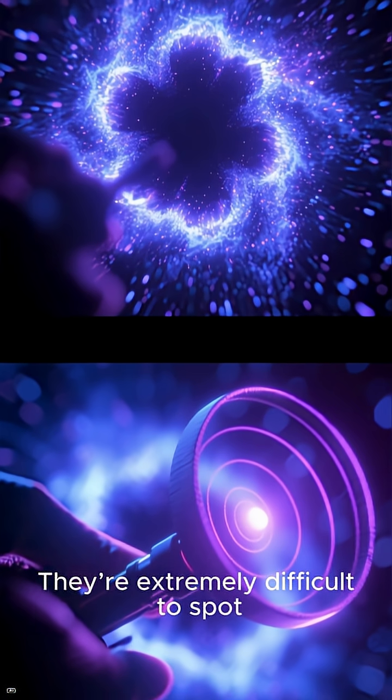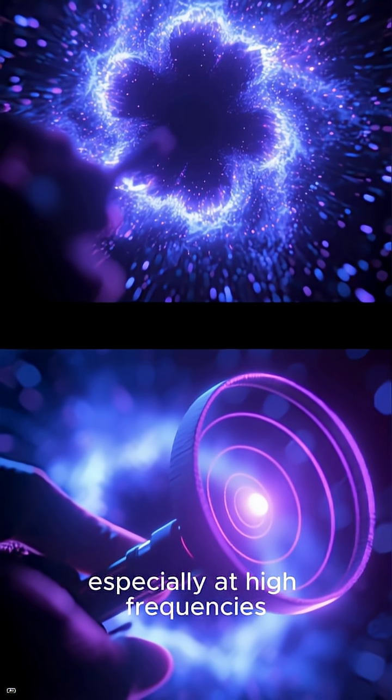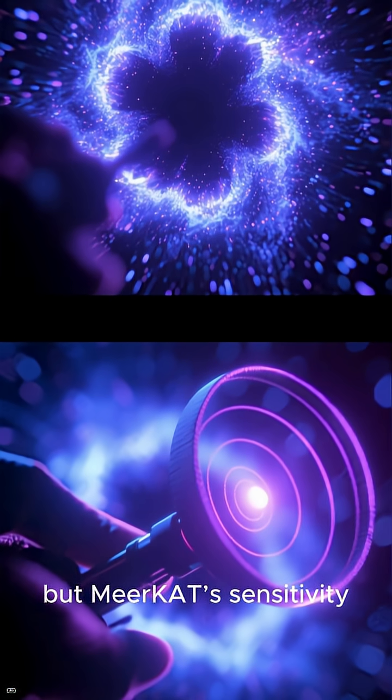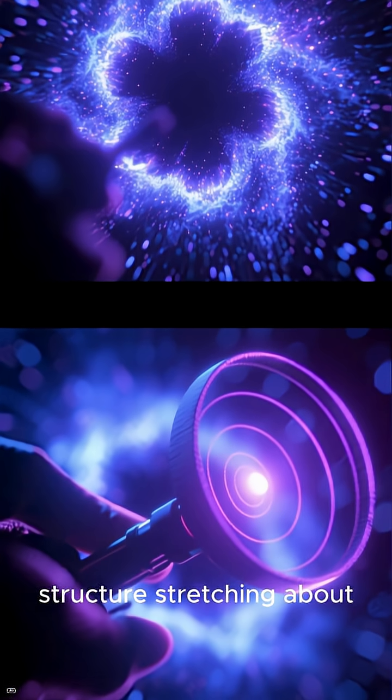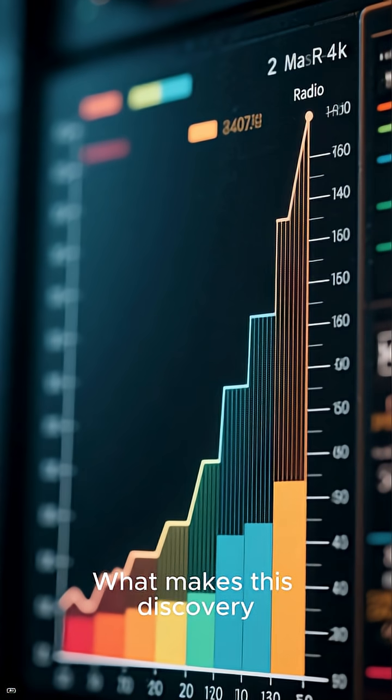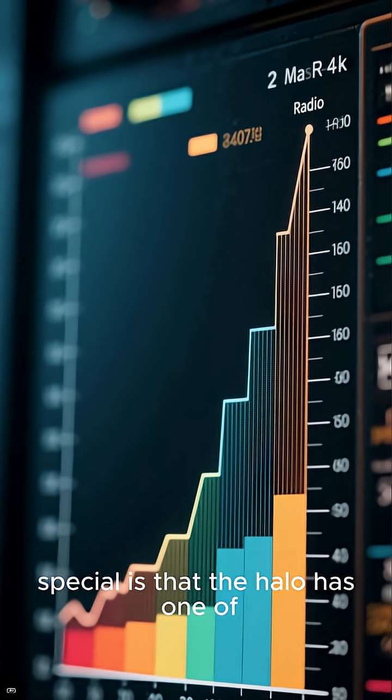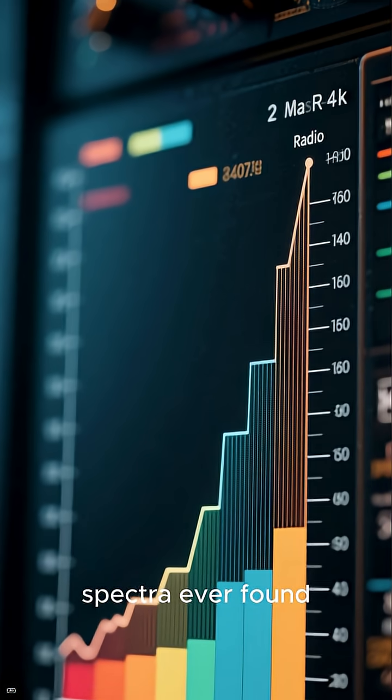They're extremely difficult to spot, especially at high frequencies. But Meerkat's sensitivity revealed this hidden structure, stretching about 0.6 million light-years across. What makes this discovery special is that the halo has one of the steepest radio spectra ever found.